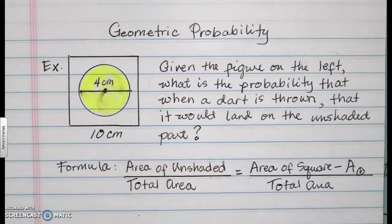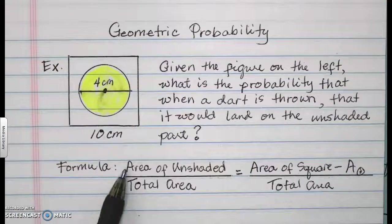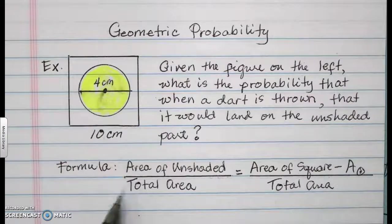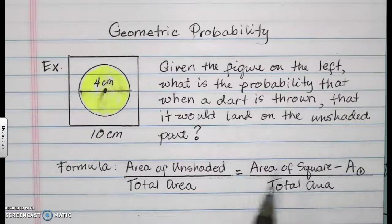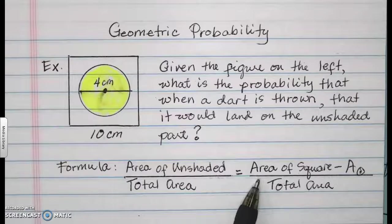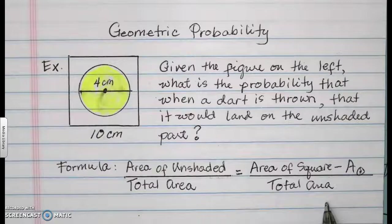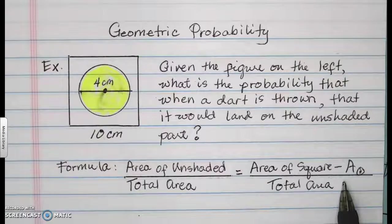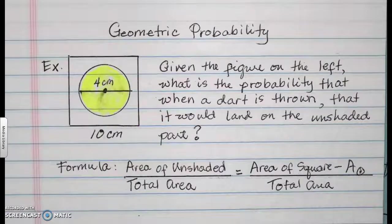So to get it, we are going to follow a formula that says area of the unshaded over the total area. How do we get the area of the unshaded? By following this formula, which is area of the overall square minus area of the circle equals your unshaded area. And then you're going to put that all over the total area.